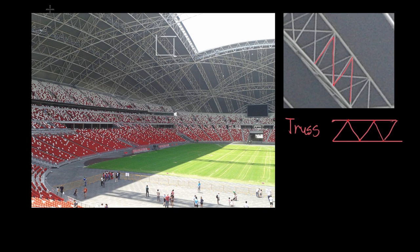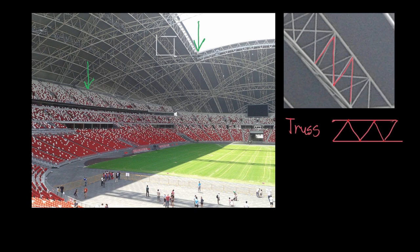The problem that this is trying to solve — and this happens with a lot of structures — is that you want to take the force coming down in one place, like the weight of the ceiling of the entire stadium, and turn that into a force acting on a different part of the structure where it can actually handle it. You'd optimally want a beam straight down from the point on the ceiling, but with a stadium that's completely impractical. You need to support that force off on the border of the stadium, where you can have thick columns and strong structures without running into the field.